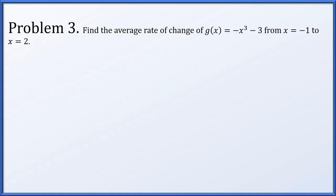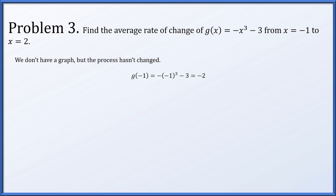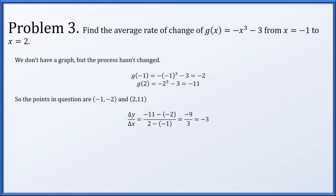Next, find the average rate of change of g(x) = -x³ - 3 from x = -1 to x = 2. We don't have a graph, but the process doesn't change. Plugging in x = -1 gives g(-1) = -2, and x = 2 gives g(2) = -11. The points are (-1, -2) and (2, -11), and the average rate of change — the slope connecting them — is -3.